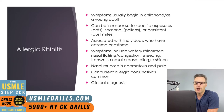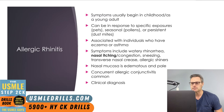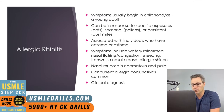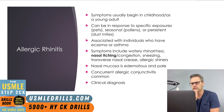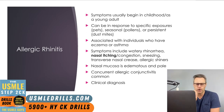Next up is allergic rhinitis. This typically develops in childhood or young adulthood, and patients who have eczema or asthma are more likely to develop this condition. One unique finding compared to other forms of rhinitis is the presence of nasal itching. Children may repeatedly rub their noses, push the tip up, and cause a transverse nasal crease. They may also develop an allergic shiner — a bluish-gray or purplish discoloration seen under the eyes.